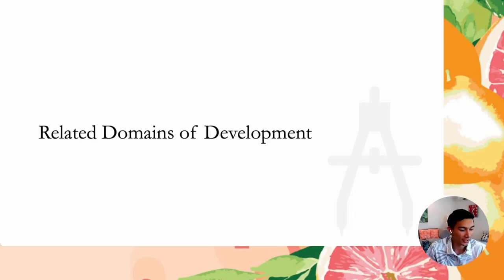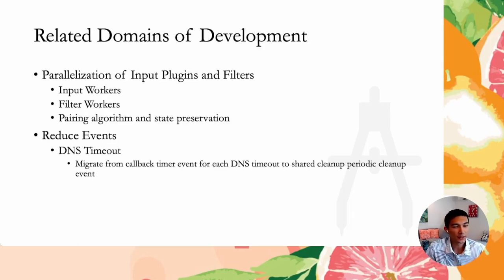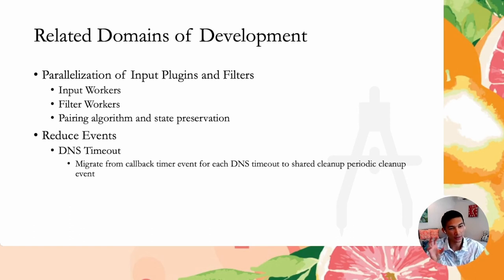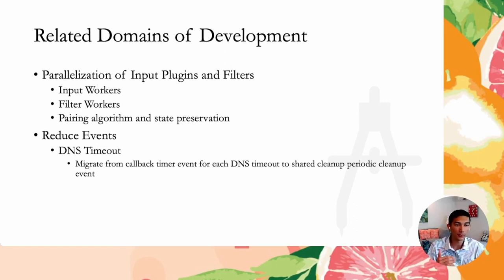Let's get into related domains of development — what's left to be done? We've covered event-driven programming paradigms, problems with the event loop and their solutions, what the event loop is, and how changes to the event loop profoundly improved network stability. Now let's look at what can be done going forward.